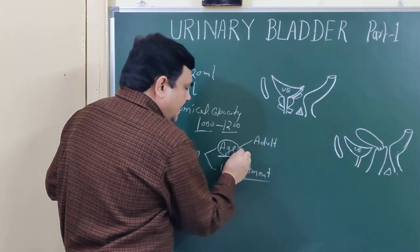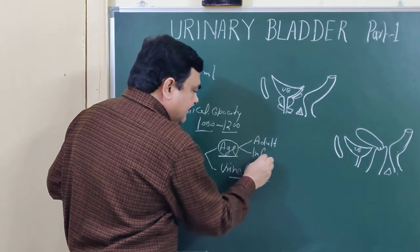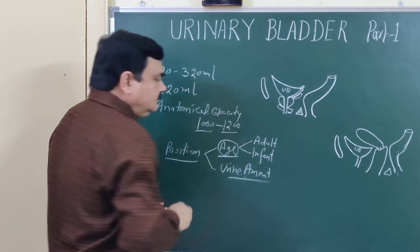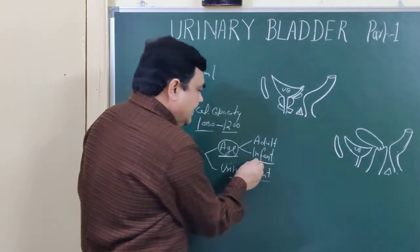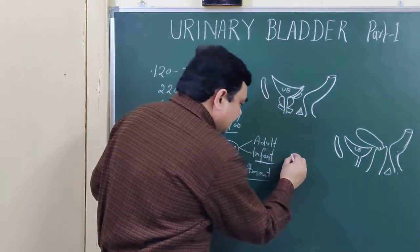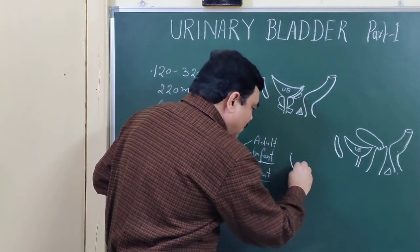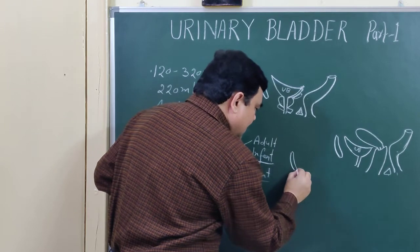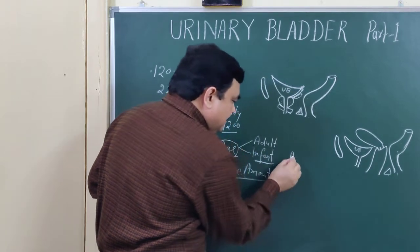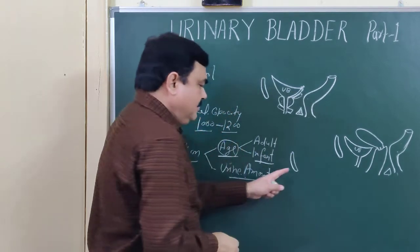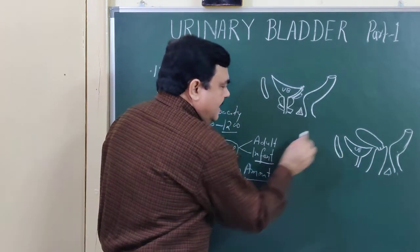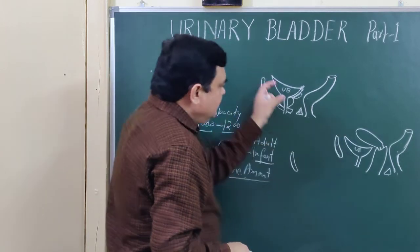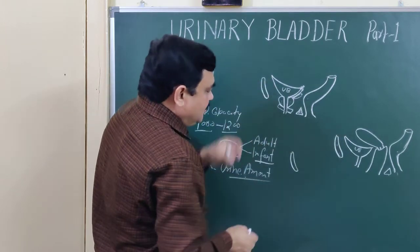In the case of infants, the position is abdominal. This is the pubic position in adults — this is the pelvic position in adults. And in infants, the position is abdominal.